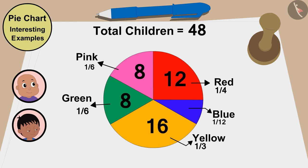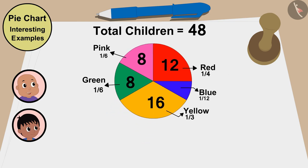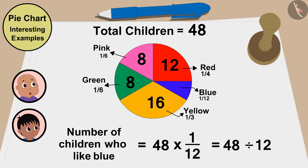And Raju, I like blue color a lot. But in this pie chart, the share of children who like blue is the smallest. Let me find out how many children like blue. The number of children who like blue is 48 times 1 by 12, or 48 divided by 12. That is 4 children, out of whom I am 1.